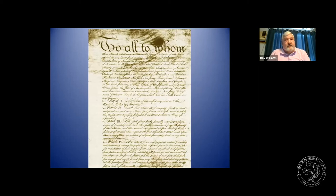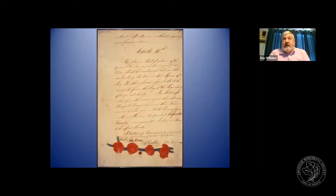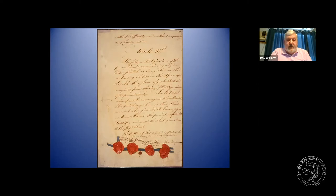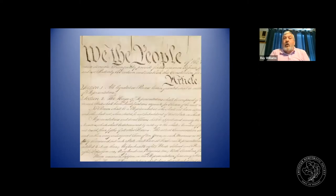Under the Articles of Confederation, states were given the right to coin their own money, and that's what we operated under. It wasn't until 1783 and the Treaty of Paris that King George agreed we were free from British rule. We coined money in four of our states — former colonies — and that coinage right had been established by the Declaration of Independence.